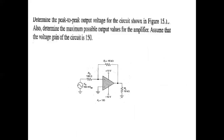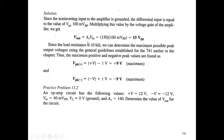In this example, we need to find the peak-to-peak output voltage. The voltage gain is 150 and the input voltage peak-to-peak is 100 millivolts. Using the formula Av = Vout / Vin, we get Vout = Av × Vin, which means Vout = 150 × 100mV peak-to-peak.